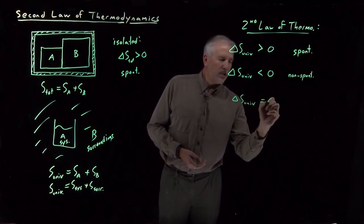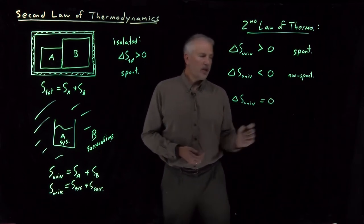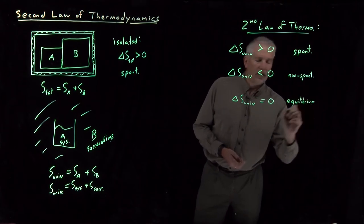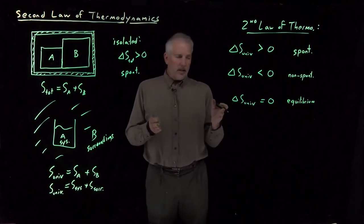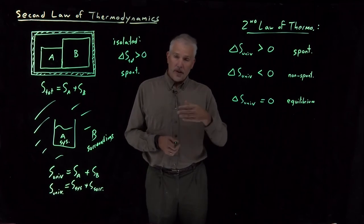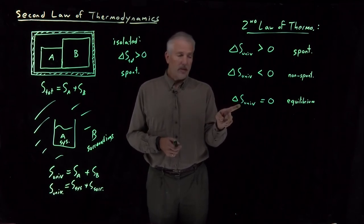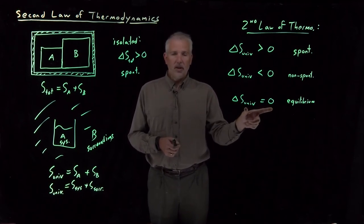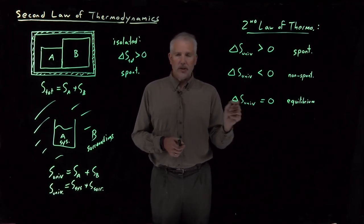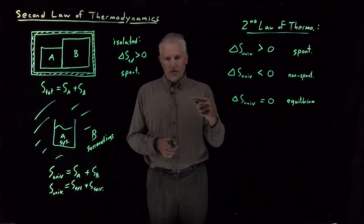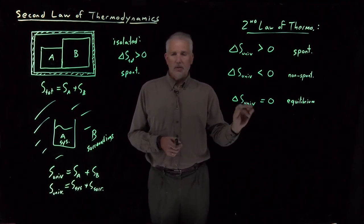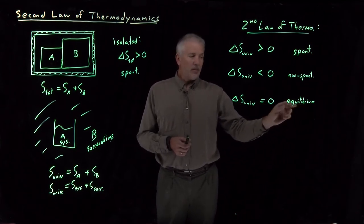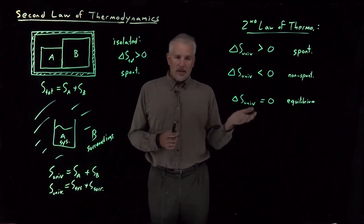That leaves one possibility we haven't discussed: what if the entropy change is equal to zero? If the entropy change is equal to zero for some process, we say that's an equilibrium process. Essentially, you could say the process doesn't care whether it does or doesn't happen. Whether it happens or happens in reverse, the entropy change of the universe is zero in all cases. What happens is the process is constantly happening forwards a little bit, backwards a little bit, none of which is changing the entropy of the system or the probability of either one of those states.